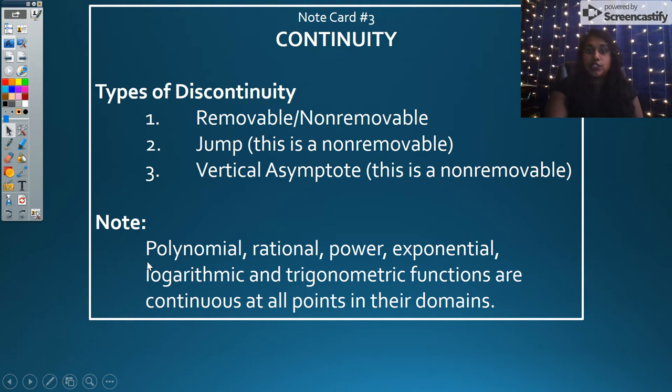Just a quick note to remind you about which functions are going to almost always be continuous unless something really weird is happening. Polynomials, they're always continuous. Rational functions are continuous in their domain. Obviously, certain rational functions don't have a negative domain, so they're not going to exist there. But where they exist, they are continuous. Power functions, these are part of our polynomials, continuous. Exponentials are continuous where their domain exists.